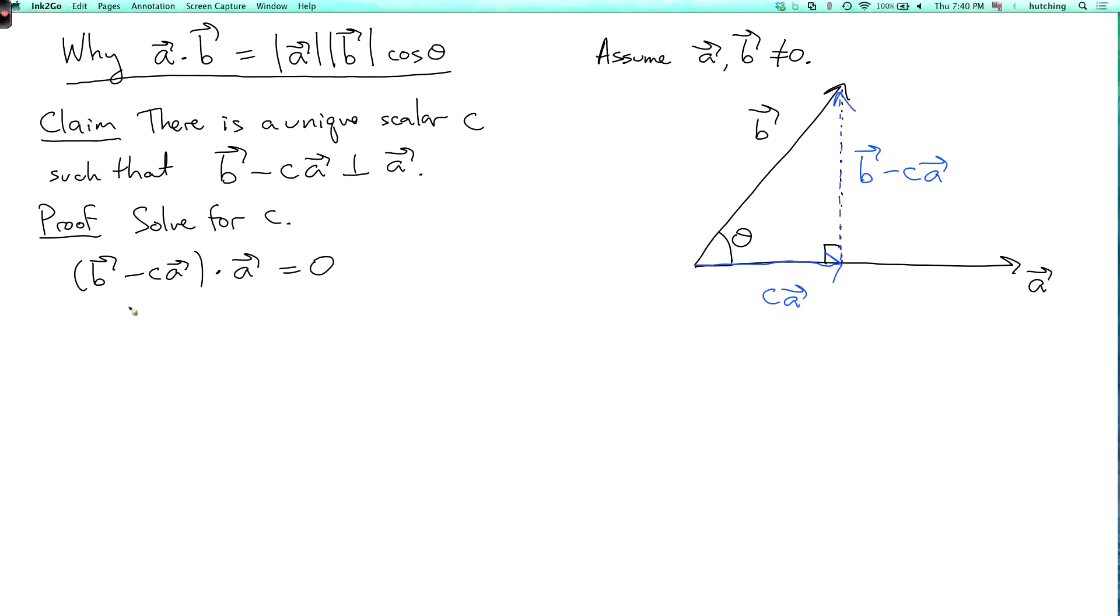And I can expand this dot product using the distributive property. So I get b dot a minus c a dot a equals zero. And I can pull the c out. So I can rewrite this as b dot a minus c times a dot a equals zero.